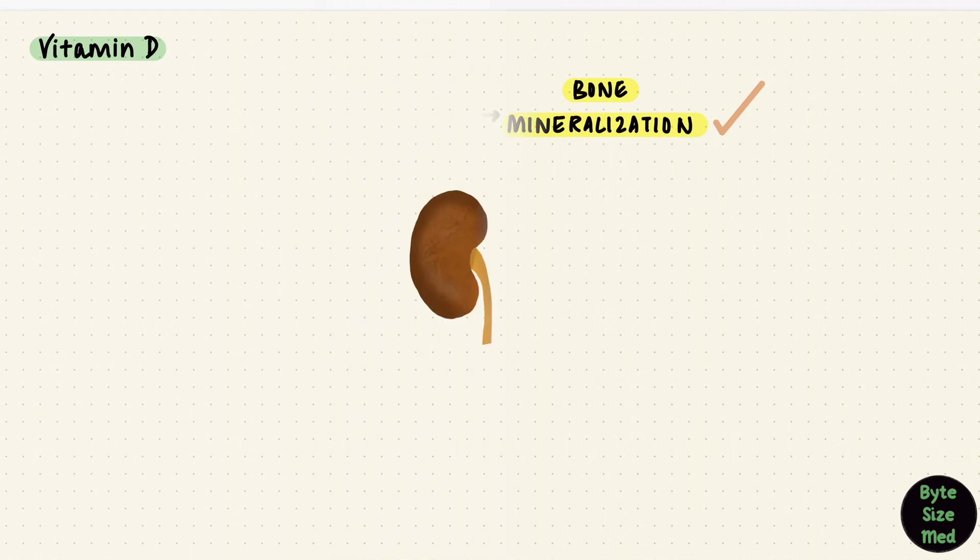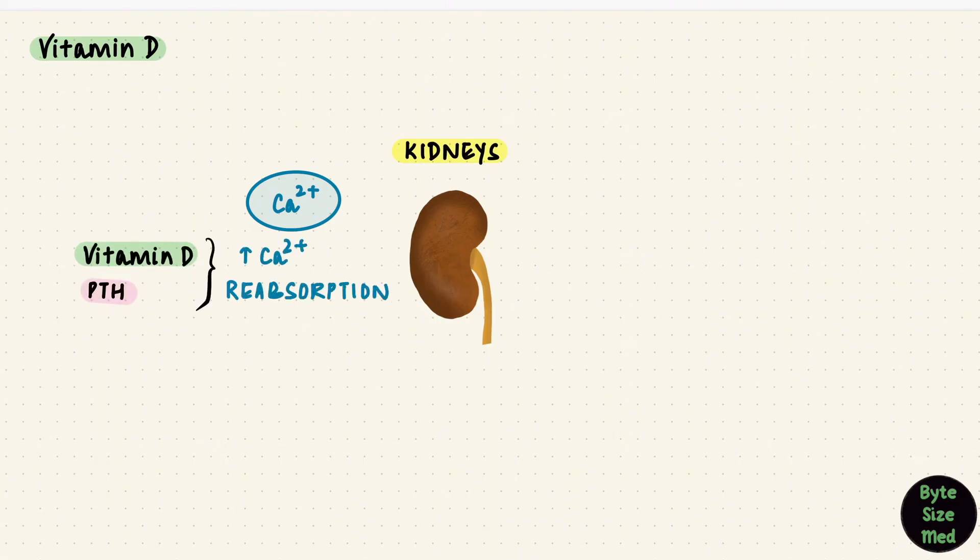The last organ is the kidney. For calcium, PTH and vitamin D work synergistically, meaning they work together to increase calcium reabsorption. How they do that differs, but vitamin D does this by protein synthesis like it did in the small intestine. But on phosphate, the actions of the two are the opposite. It increases those transporters like it did in the small intestine. So it increases phosphate reabsorption and reduces its excretion, unlike PTH, which reduces phosphate reabsorption and thus increases its excretion.